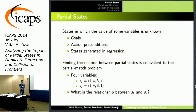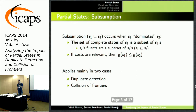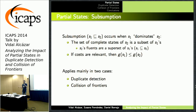An interesting case is the relationship between two states where values may be the same, but for some variables it is unknown and for others it is known. The most important case is the so-called subsumption of states, where one dominates the other because a smaller state represents more complete states. If a state's value is at least equal or smaller, you don't have to care about the other one.